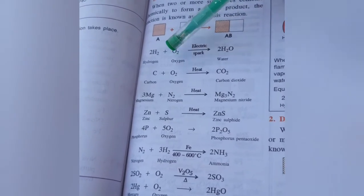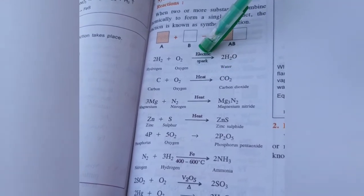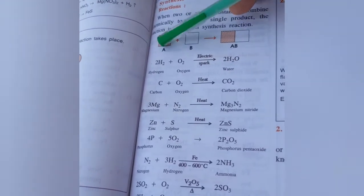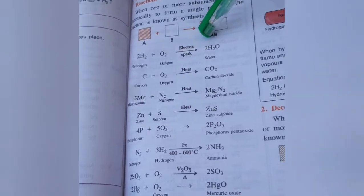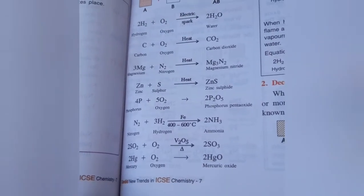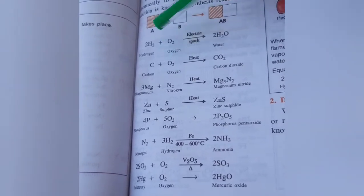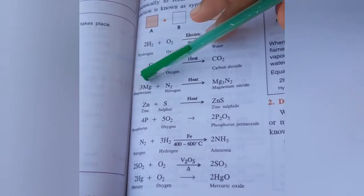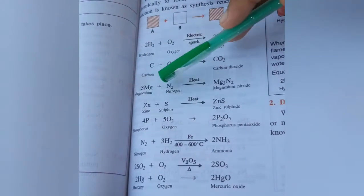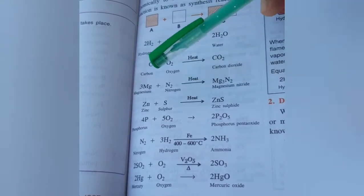Examples: 2H2 plus O2 equals 2H2O on electric spark. This is a synthesis combination reaction. Next, C plus O2 equals CO2 on heating. 3Mg plus N2 on heat equals Mg3N2.